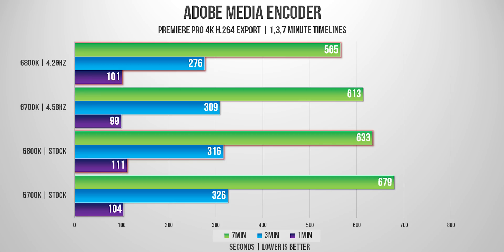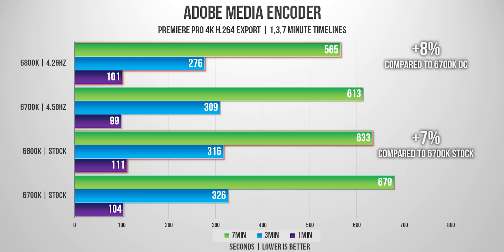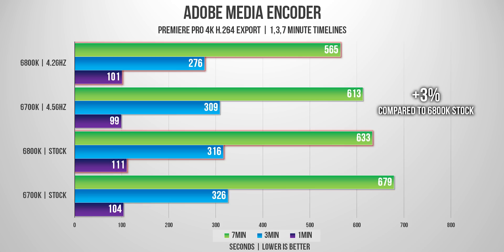Here we go — I exported a 1-, 3-, and 7-minute timeline with both CPUs at stock and overclock. The 6-core machine at stock speeds finished 7% faster on the longest timeline than the Skylake CPU, and only 8% faster when comparing overclock to overclock. It's also very interesting to see that my 6700K at 4.5GHz finished 3% faster compared to the 6-core at stock speeds.